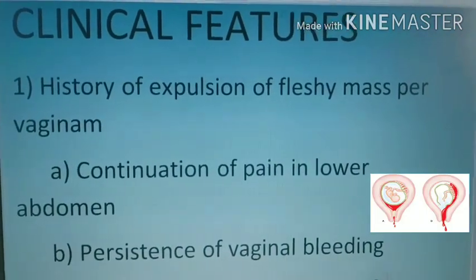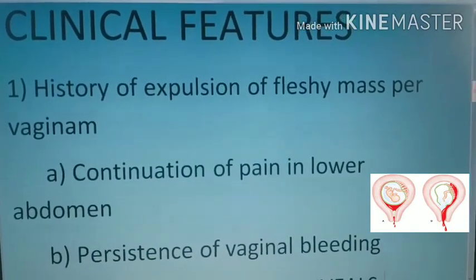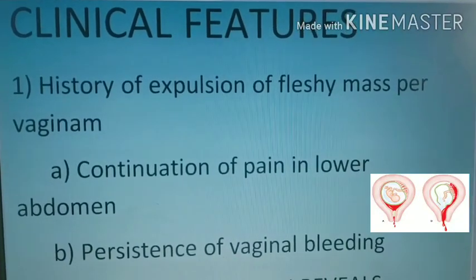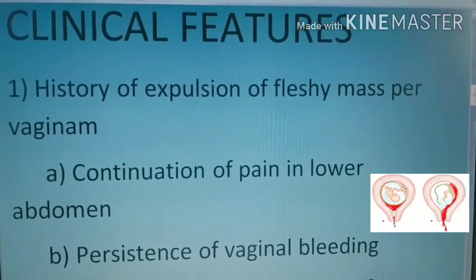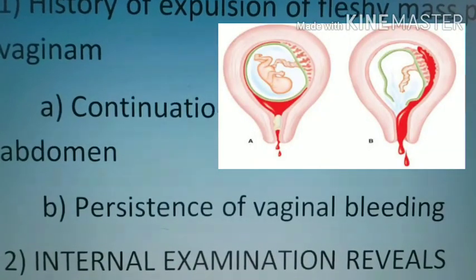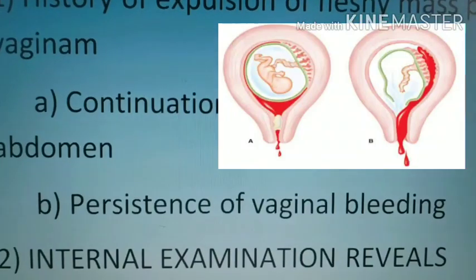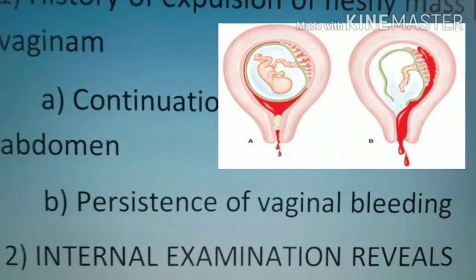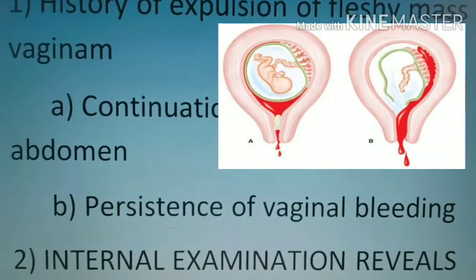Next are clinical features. A patient will give a history of expulsion of a fleshy mass per vaginum. There is continuation of pain in the lower abdomen because the products of conception are still left in the uterine cavity, and there is persistence of vaginal bleeding. Bleeding persists because normally when the placenta is delivered, the uterus contracts down and closes all the blood vessels. If the placenta is partially separated, the uterus cannot contract properly, so the blood vessels inside the uterus will continue to bleed.